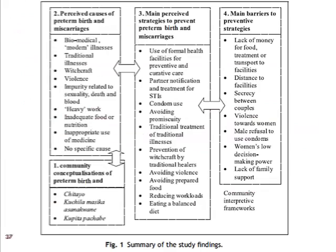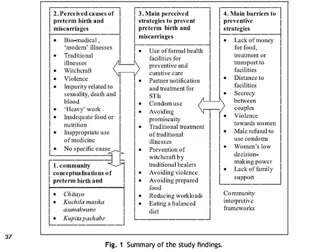How are each of these themes interrelated? Consider figure one. The community's conceptualization of preterm birth really influences how the community perceives the cause of preterm birth and miscarriage, which in turn influences the strategies the community thinks are available to prevent them. By learning about community perception, we learn what barriers may prevent women from accessing these prevention strategies.